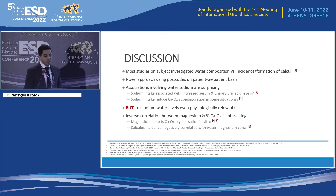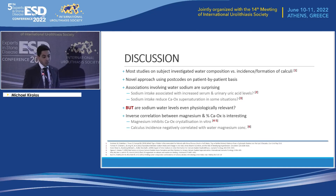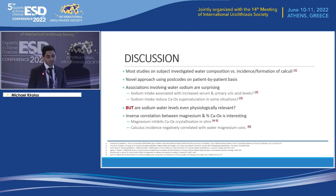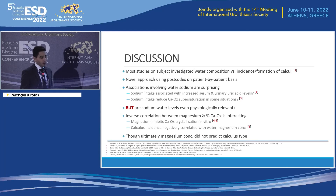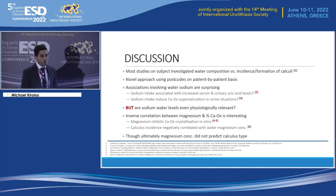The inverse correlation between magnesium and calcium oxalate is interesting and is supported by studies in the literature. In vitro studies have demonstrated that magnesium inhibits calcium oxalate crystallization. Interestingly, one observational study found that calculus incidence inversely correlated with the magnesium concentration in tap water. Having said that, in our study the magnesium concentration ultimately did not predict calculus type on multivariate analysis — in other words, patients living in areas with higher magnesium concentration in tap water were just as likely to have calcium oxalate calculi.